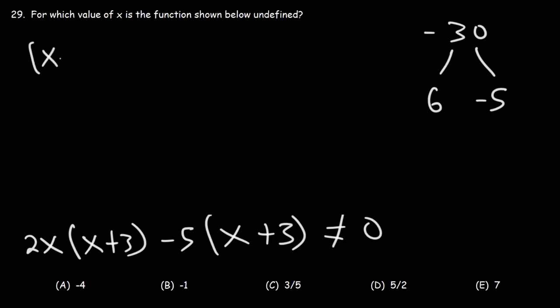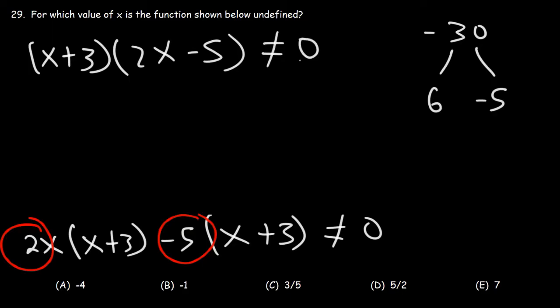So next we need to factor out x plus 3. And what goes in the second parentheses will be what we see here, 2x minus 5. So none of these factors must be equal to 0.